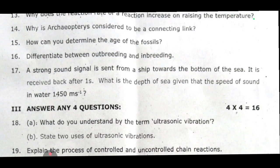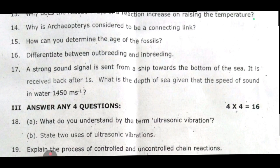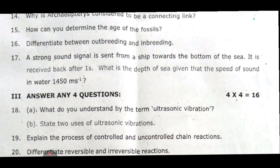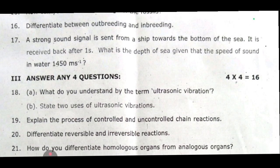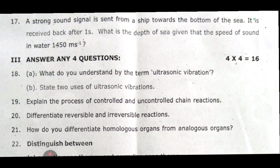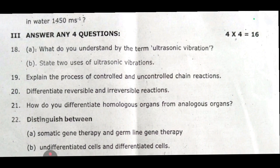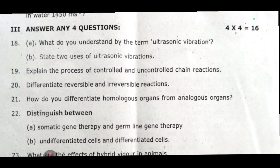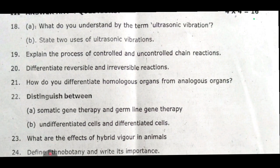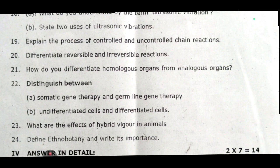Eighteenth one: part A — what do you understand by the term ultrasonic vibration? Part B — state two uses of ultrasonic vibrations. Nineteenth one: explain the process of controlled and uncontrolled chain reactions. Twentieth one: differentiate reversible and irreversible reactions. Twenty-first: how do you differentiate homologous organs from analogous organs? Twenty-second: distinguish between A — somatic gene therapy and germline gene therapy, and B — undifferentiated cells and differentiated cells. Twenty-third: what are the effects of hybrid vigor in animals? Twenty-fourth: define ethnobotany and write its importance.